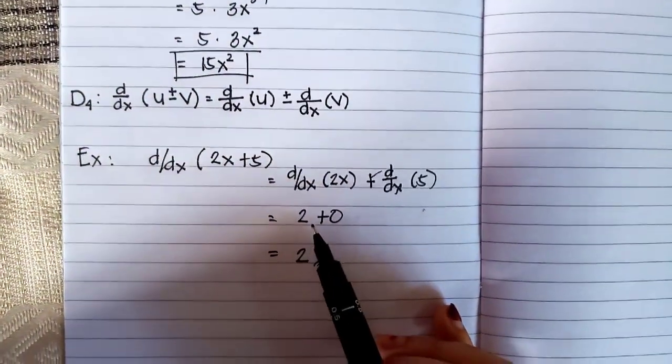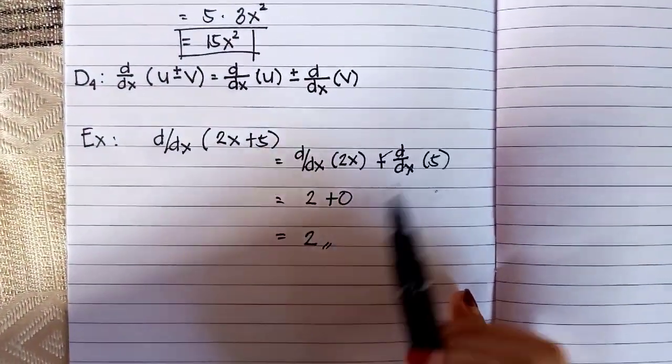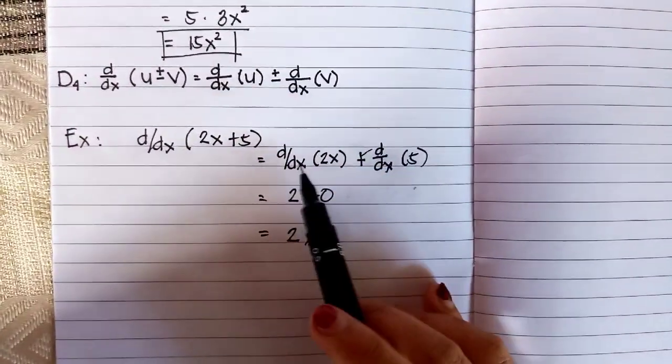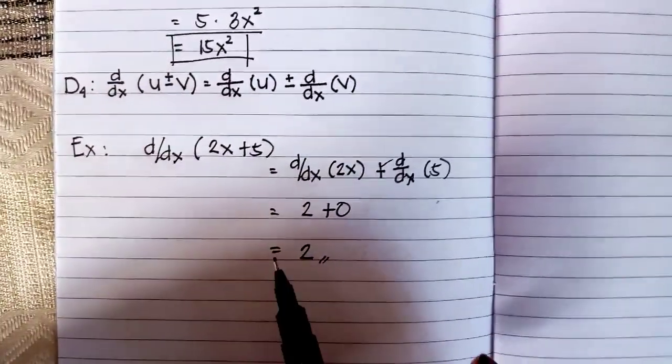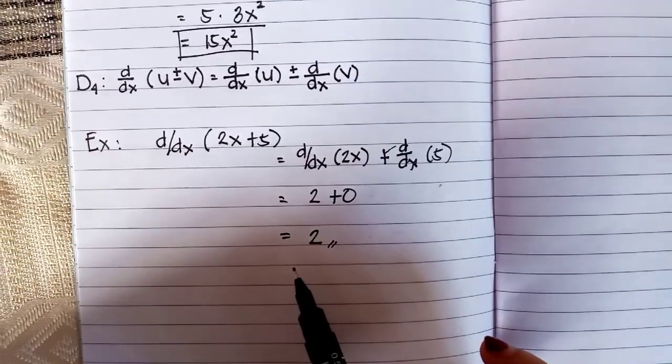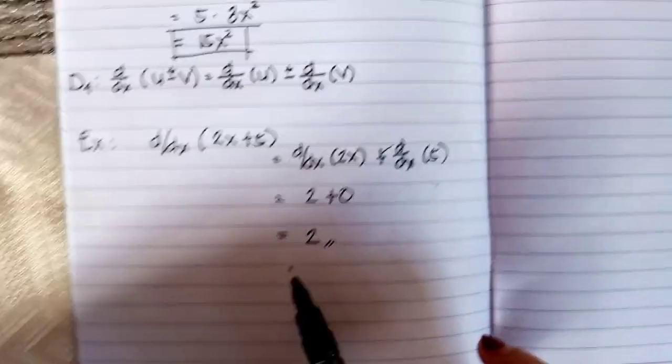So the answer of d/dx of 2X is 2, and the answer of d/dx of 5 is 0, where 5 is in formula number 1 which is constant, so that will give answer 0. The final answer will be 2.